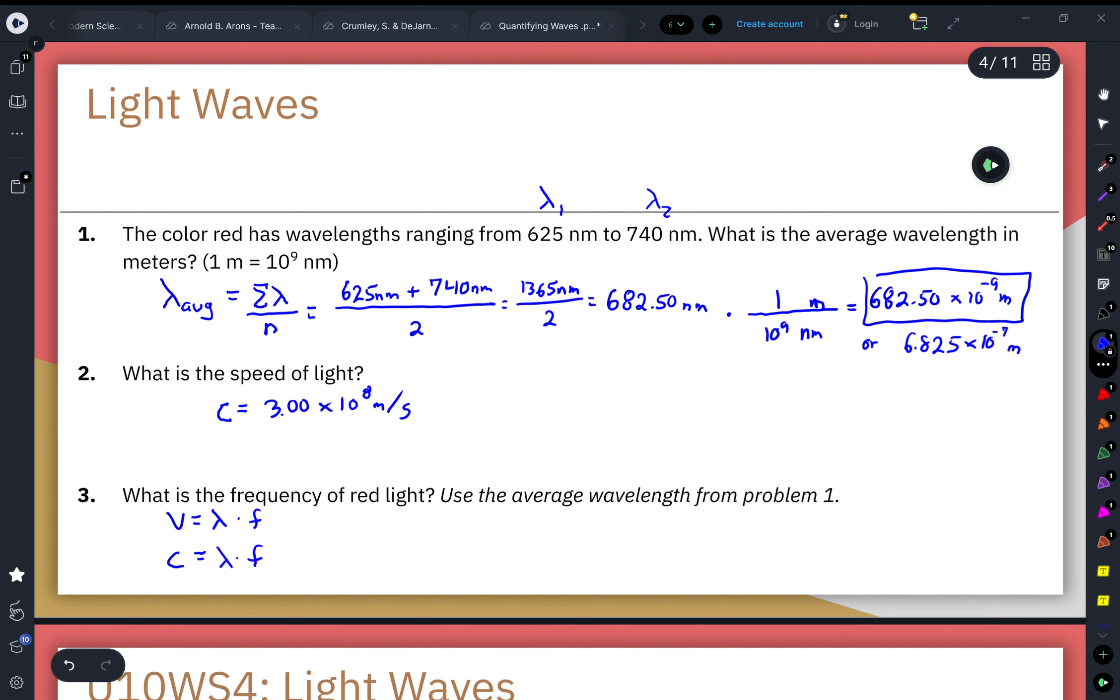If we want to get the frequency, what we're solving for, by itself, we would just divide both sides by the wavelength, canceling out wavelength here. So that way we can end up writing this as our frequency is equal to our speed of light divided by our wavelength.